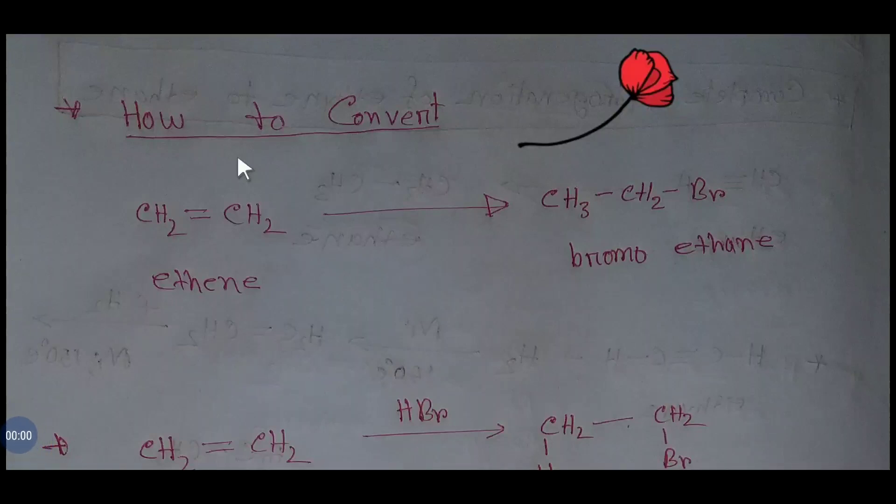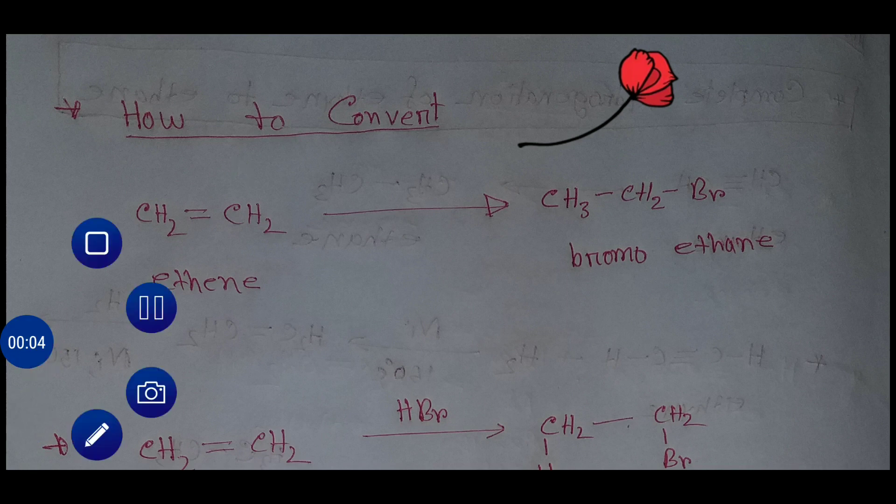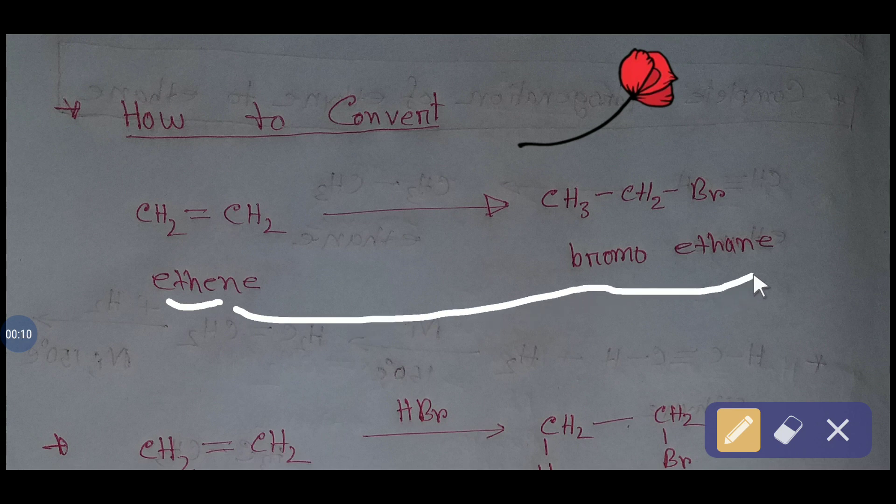Hello everyone, today we are going to learn how to convert ethene to bromoethane. Ethene is an alkene and bromoethane is an alkyl halide. To convert ethene to bromoethane, we have to apply an addition reaction.